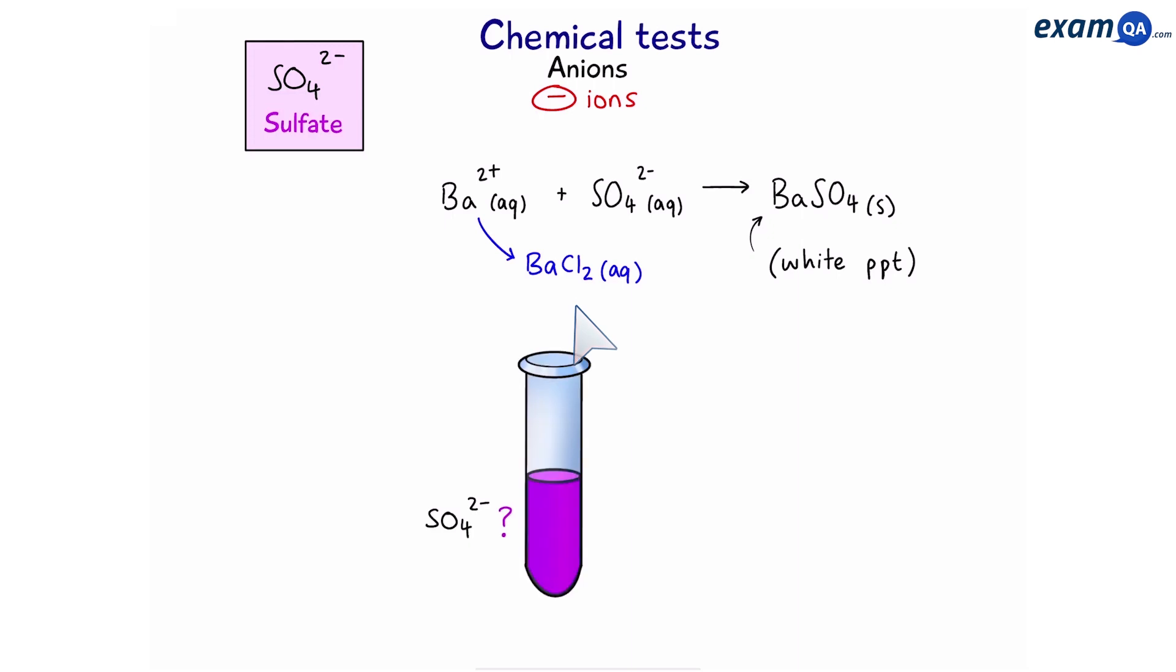So we have a mystery solution and you want to know if it contains sulfate ions. Now before you rush in and add the barium chloride it's important to note that there may be some unwanted impurities such as carbonates and sulfites. If we added the barium chloride and these impurities were present they would also create white precipitates and we'll get a false positive.